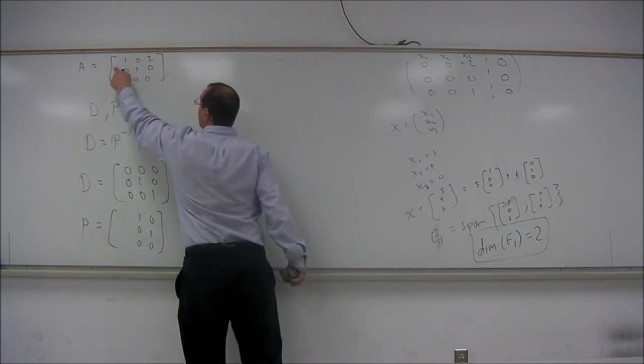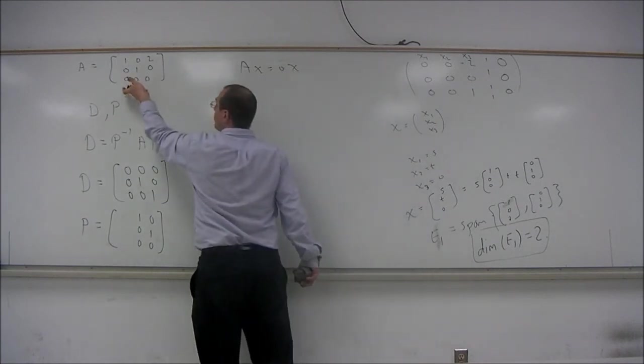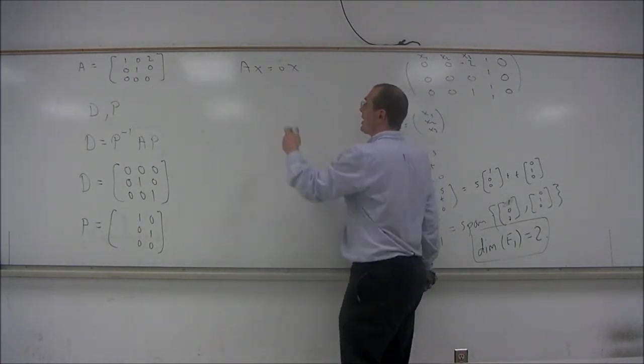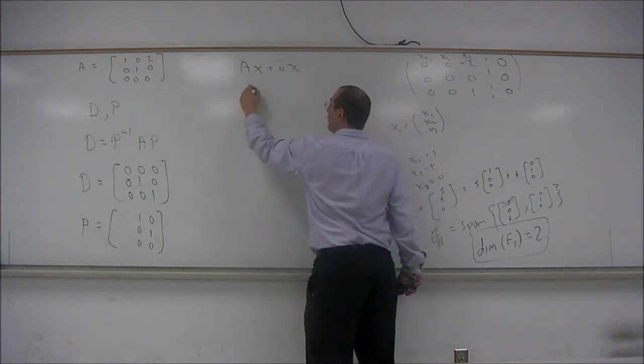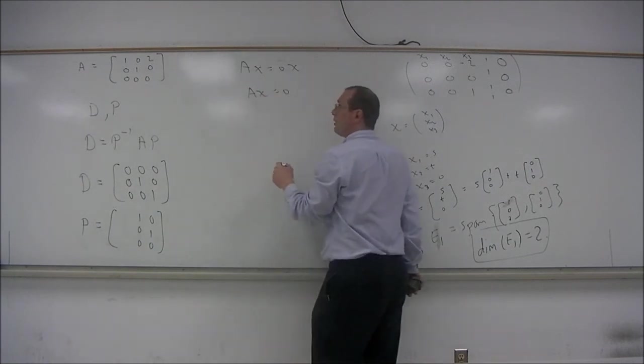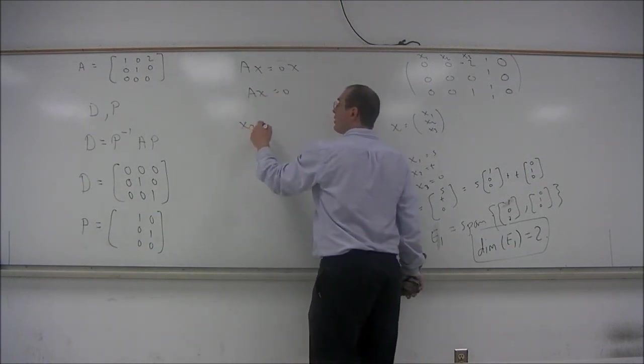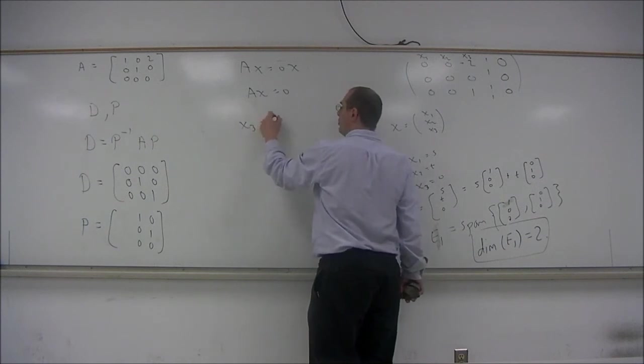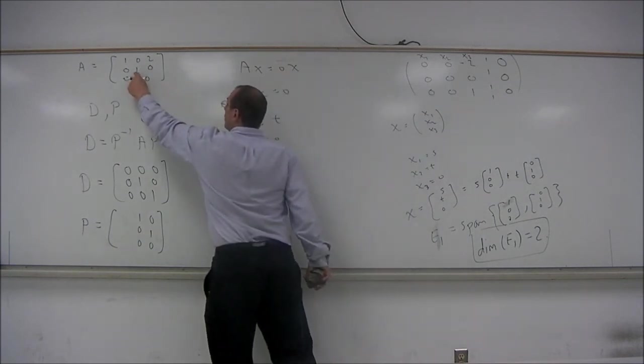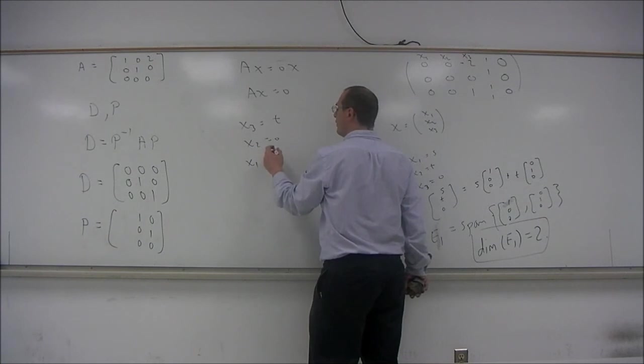So the matrix was here, and we were doing Ax equals 0x. So we just need to row reduce this matrix. It was just Ax equals 0 then. So x3 is going to be a parameter. x2 is going to be 0 from that one.